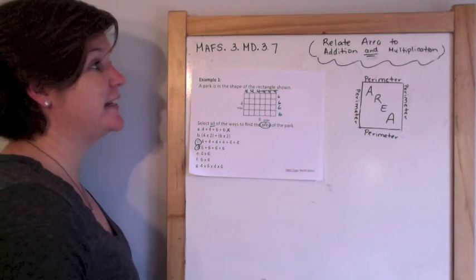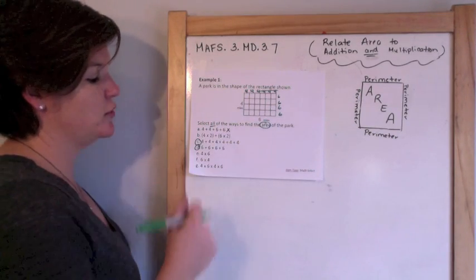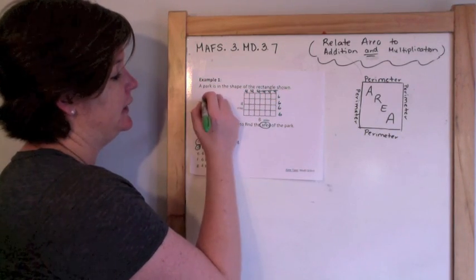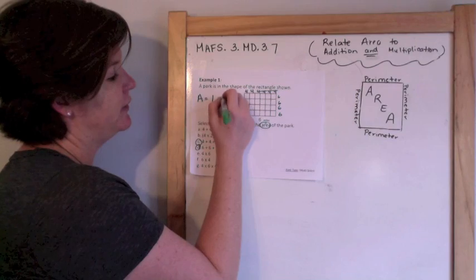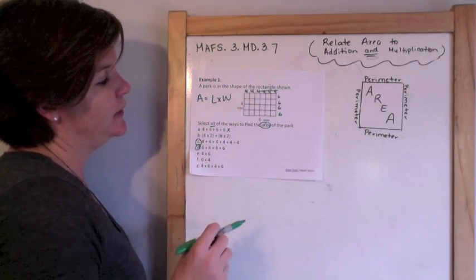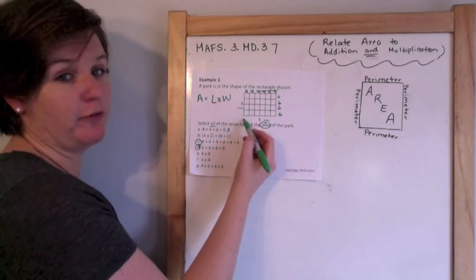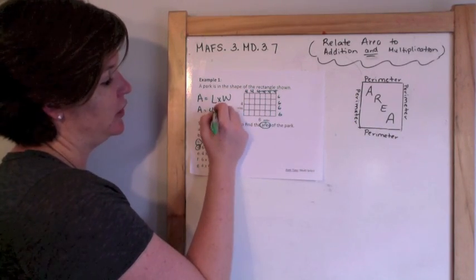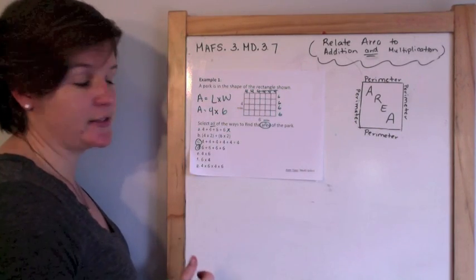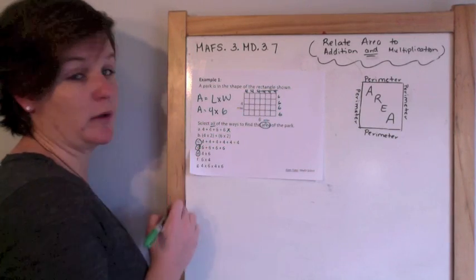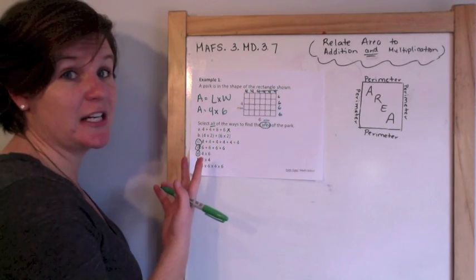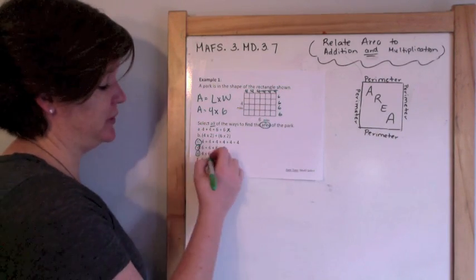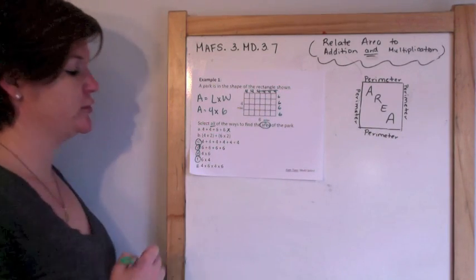We've done the relating addition. Now let me show you how to do multiplication. You just take area equals the length times the width. Our length is 4 and our width is 6, so 4 times 6 would work. And you could also use the commutative property — 6 times 4. So those are all correct answers.